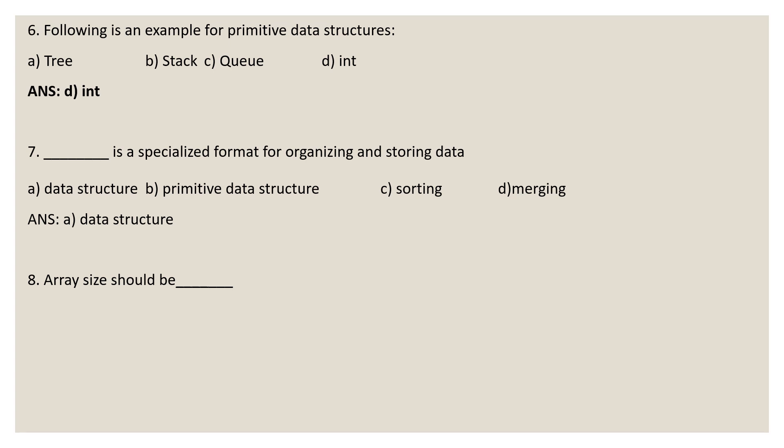Question 8: array size should be? Options: a negative number, positive number, null, or zero. The correct answer is a positive number. An array with one row or one column is called a one-dimensional array — it is a finite collection of n elements of the same type stored in contiguous memory locations. Array size is always a positive number, from zero up to n number of elements.